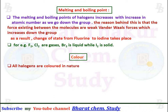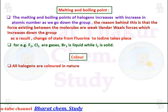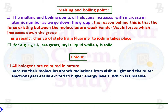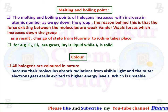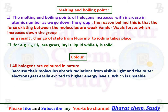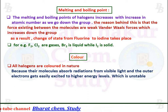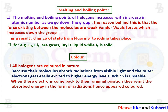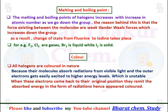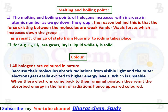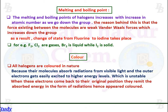Color: all halogens are colored in nature because their molecules absorb radiation from visible light, and the outer electrons get easily excited to higher energy levels, which are unstable. When these electrons come back to their original position, they re-emit the absorbed energy in the form of radiation, and hence appear colored.